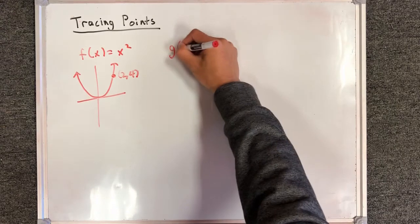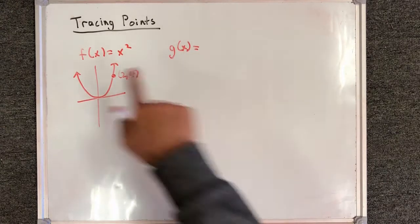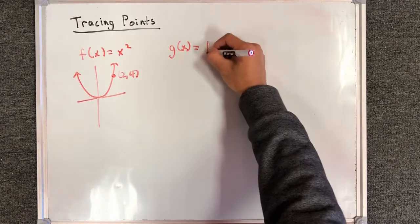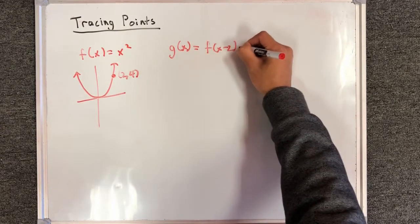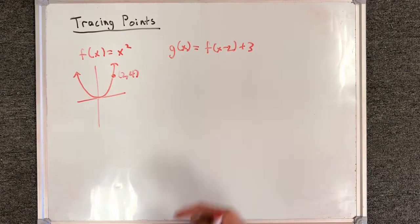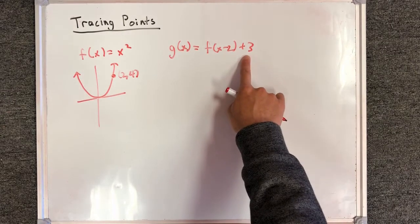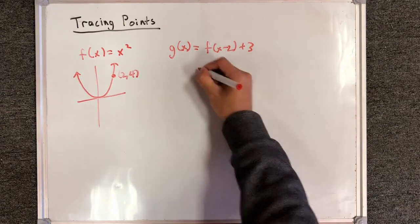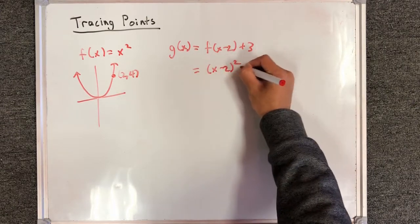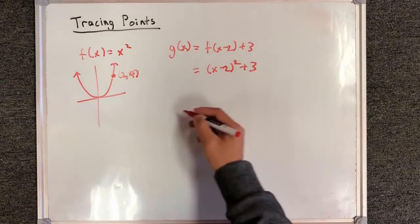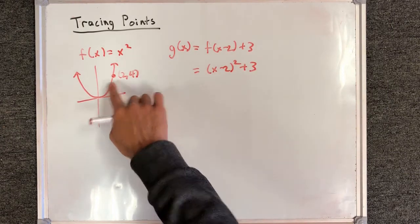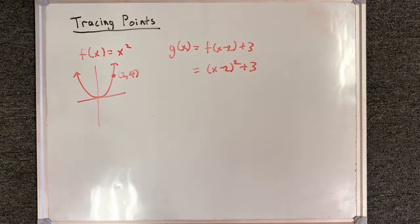Now let's say we were given a second function g of x that takes f of x and transforms it in such a way that it'll move it 2 units to the right and 3 units upwards. So f of x minus 2 to the right plus 3 on the outside — that'll move it upwards. The equation for this will be x minus 2 squared plus 3. And I was interested in what happens to this point after it's been transformed by g of x.